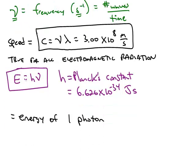We also have a formula that relates the energy E to the frequency nu. That energy equals a constant — Planck's constant, 6.626 times 10 to the negative 34th joules times seconds — multiplied by frequency. This gives you the energy of one photon of radiation. A photon is the smallest unit of light; you can think of it as a BB or a bullet of light.